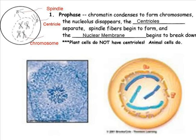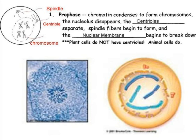Take a moment to make a sketch of what the cell looks like during prophase in the space provided on your paper. Be sure to label the spindle fibers, the centrioles, and the chromosomes.